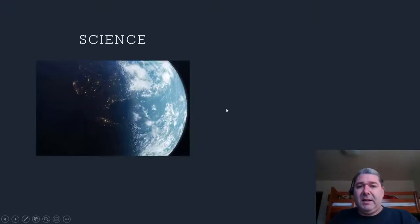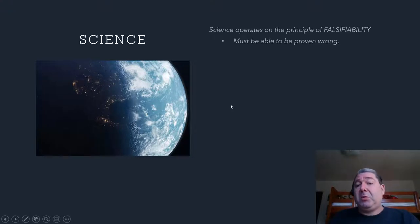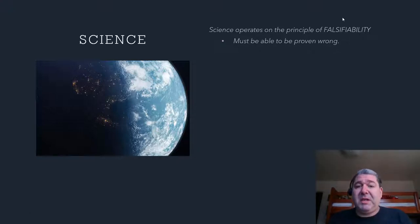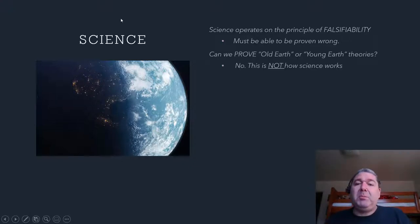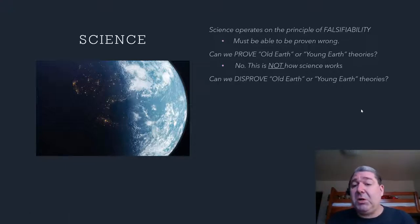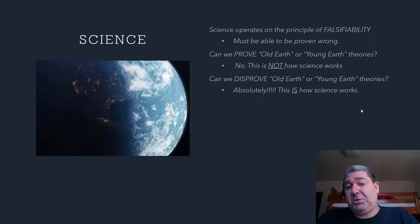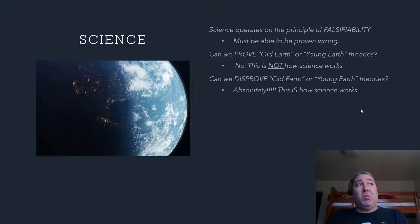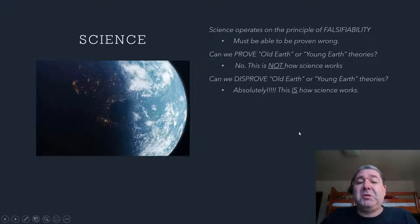So let's go back and talk about science again. Science operates on the principle of falsifiability. Science does not prove things correct — science proves things wrong. So in order to be scientifically tested, it must be able to be proven wrong. Therefore, the question: can we prove Old Earth Theory, or for that matter, can we prove Young Earth Theory? Well, no, this is not how science works. Science does not prove things; science disproves things. Can we disprove Old Earth or Young Earth theories? Well, yes, of course, this is how science works. The more challenges are thrown at a theory and the more it withstands those challenges, the stronger the theory becomes. But again, we do not prove things — we disprove things.